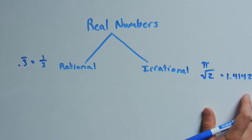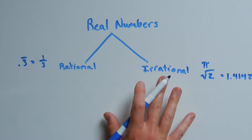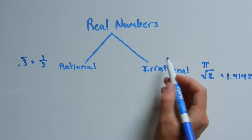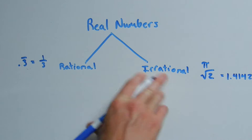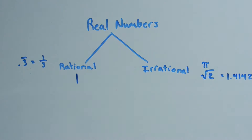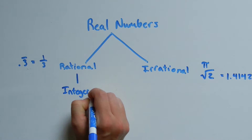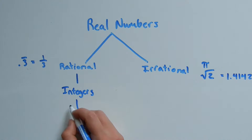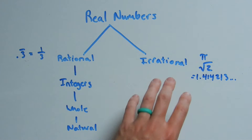So real numbers are divided into rational and irrational numbers. Irrational numbers do not divide into anything else, so this is where that branch ends on the tree. However, rational numbers contain integers, integers contain whole numbers, and whole numbers contain natural numbers.